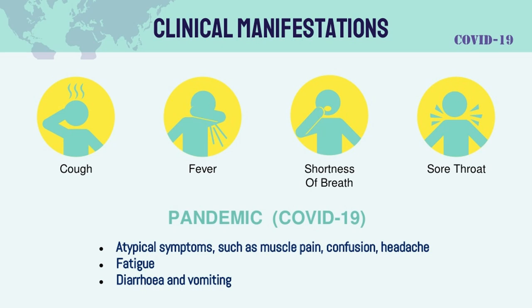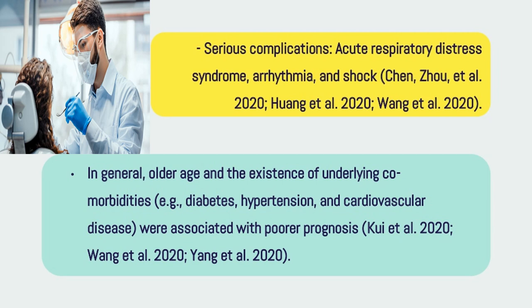Clinical manifestations of the COVID-19 pandemic include cough, fever, shortness of breath, sore throat, and atypical symptoms such as muscle pain, confusion, headache, fatigue, diarrhea, and vomiting. In general, older age and the existence of underlying comorbidities — e.g., diabetes, hypertension, and cardiovascular disease — were associated with poorer prognosis (Quai et al. 2020, Huang et al. 2020, Yang et al. 2020).